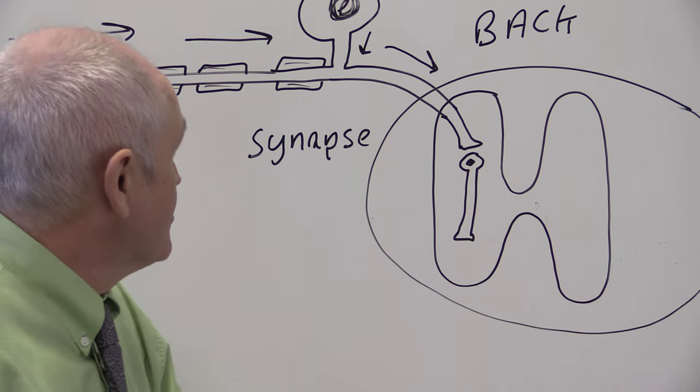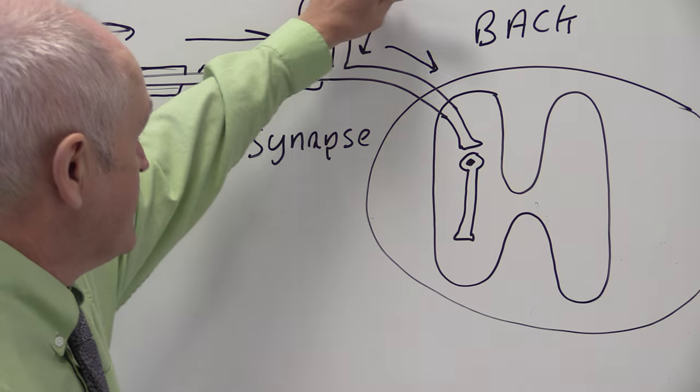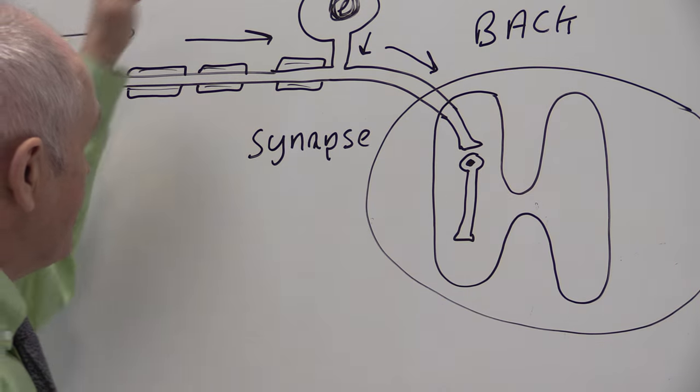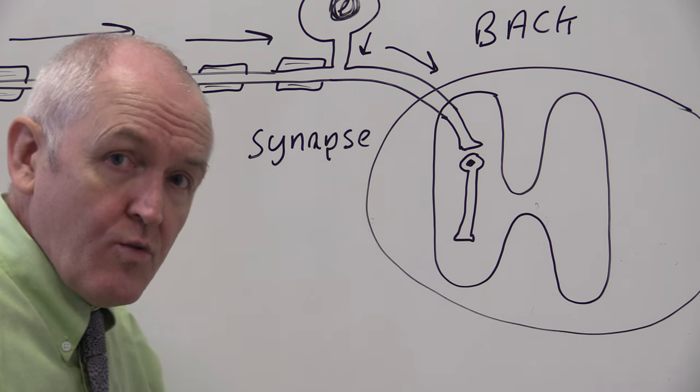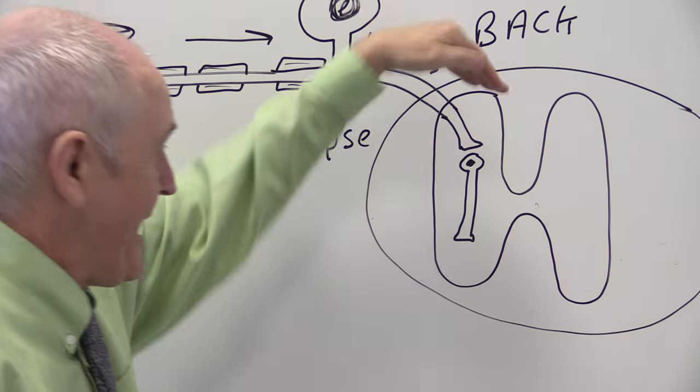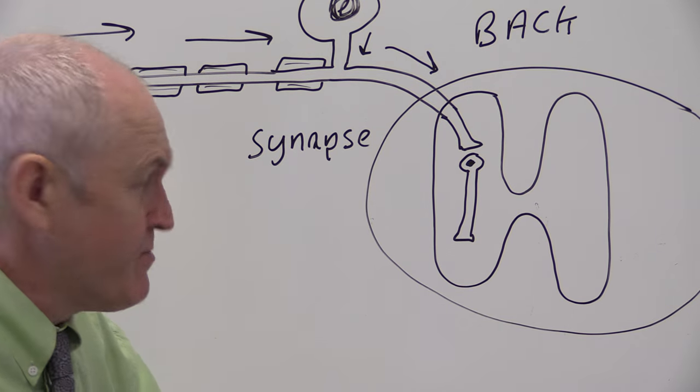Dorsal and posterior and back all mean the same thing. The dorsal root is the posterior root, and the sensory impulses always take the root into the back. They always go into the back of the spinal cord.